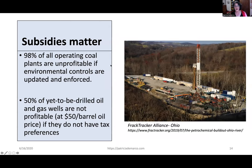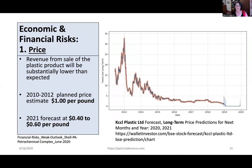The subsidies matter. 98% of all operating coal plants are unprofitable if environmental controls are updated and enforced, and 50% of the yet-to-be-drilled oil and gas wells are not profitable at $50 a barrel oil price if they don't have tax preferences. These industries are not inherently robust — they have been supported by federal tax dollars since the 1800s. There was a major study put out by the Institute for Energy Economics and Financial Analysis that came out earlier this year, in June, revealing six economic and financial risks about the oil and gas fracking industry.